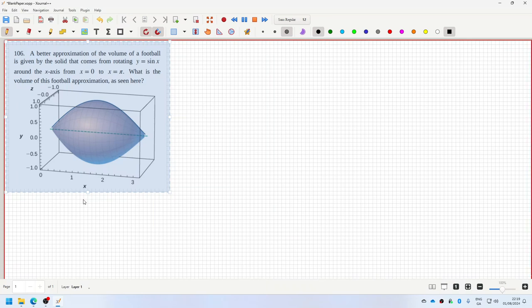A better approximation of the volume of a football is given by the solid that comes from rotating y equals sine x around the x-axis from zero to pi. What is the volume of the football approximation as seen here?